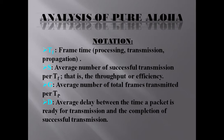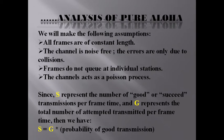Analysis of Pure ALOHA: Tf is frame time, meaning processing plus transmission plus propagation time. S is the average number of successful transmissions per Tf — that is, the throughput or efficiency. G is the average number of total frames transmitted per Tf. D is the average delay between when a packet is ready for transmission and the completion of its successful transmission. Assumptions: all frames are of constant length; the channel is noise-free; errors are only due to collisions; frames do not queue at individual stations; the channel acts as a Poisson process. Since S represents good transmissions per frame time and G represents total attempts per frame time, S equals G times the probability of a good transmission.